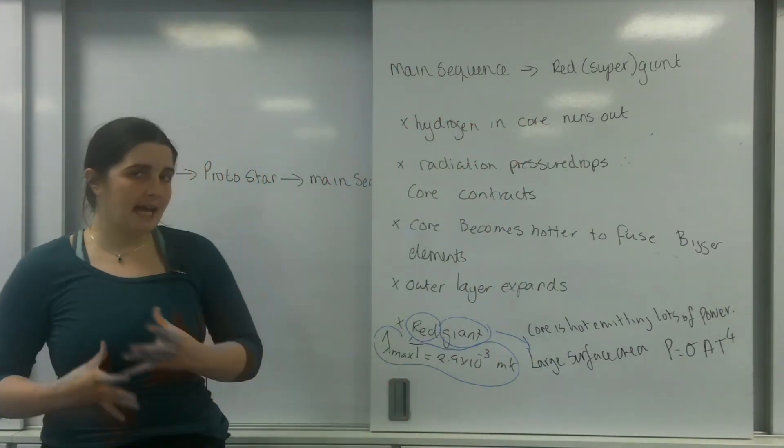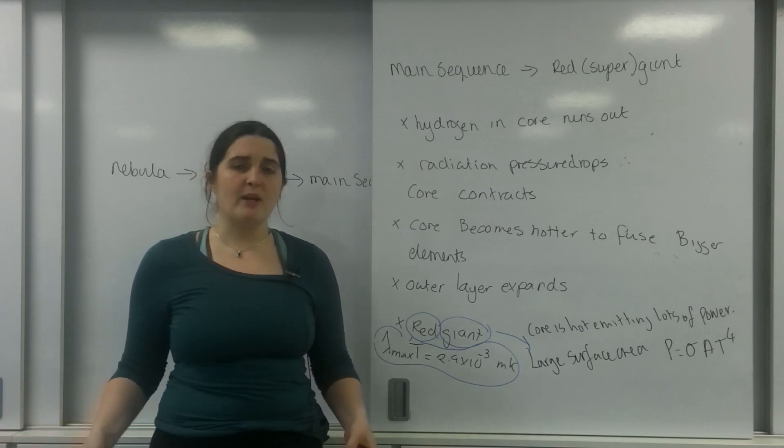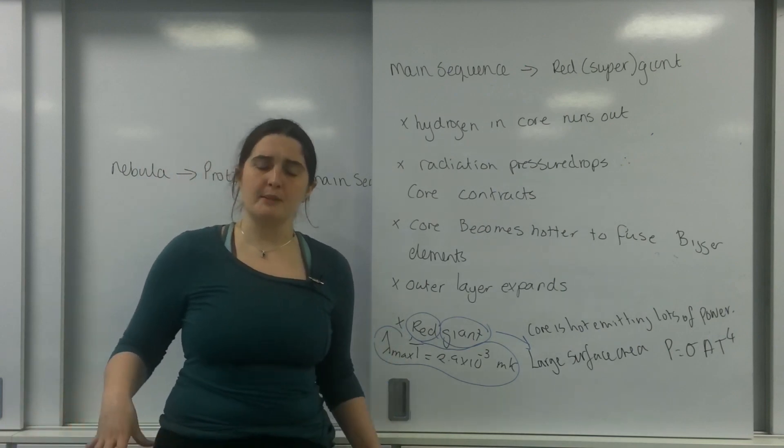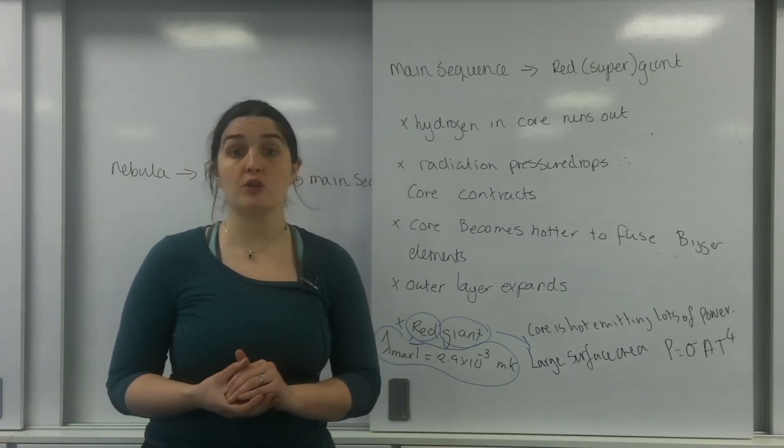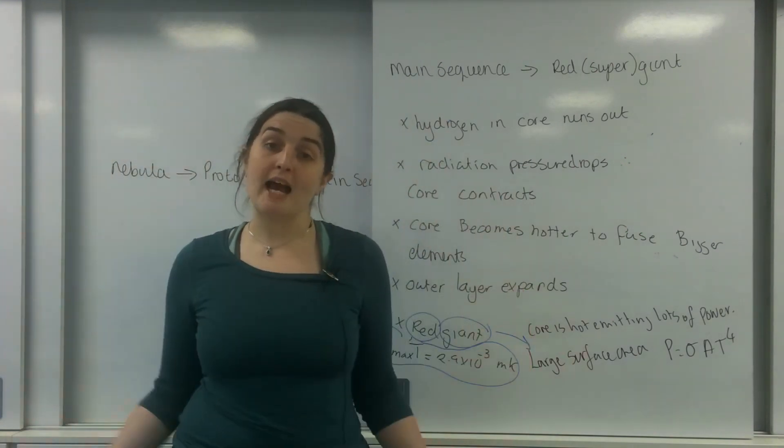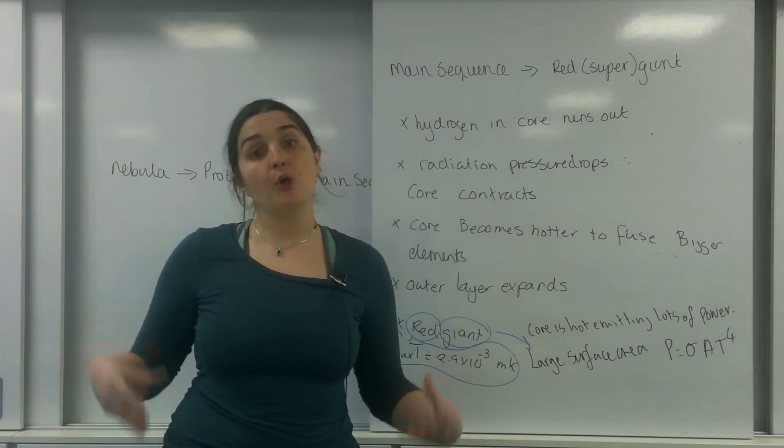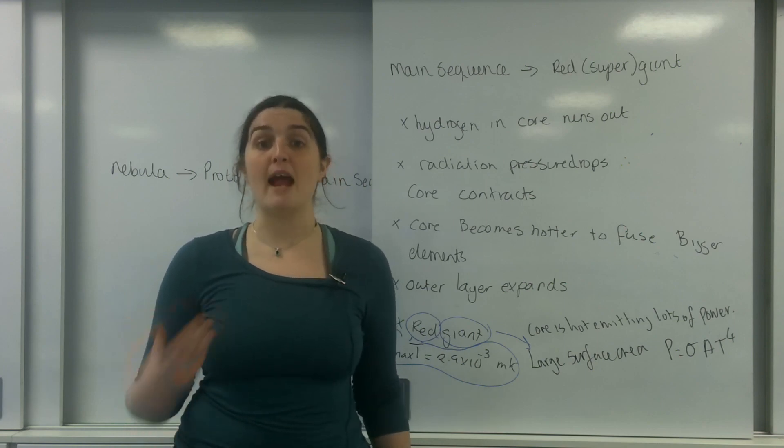The core becomes hotter to fuse those bigger elements, which means the outer layer expands. Because the outer layer has expanded, we call them giant stars. But the reason they are red is because even though the core is hotter, the corona, this outer layer, is much cooler, so because of Wien's law appears more red.